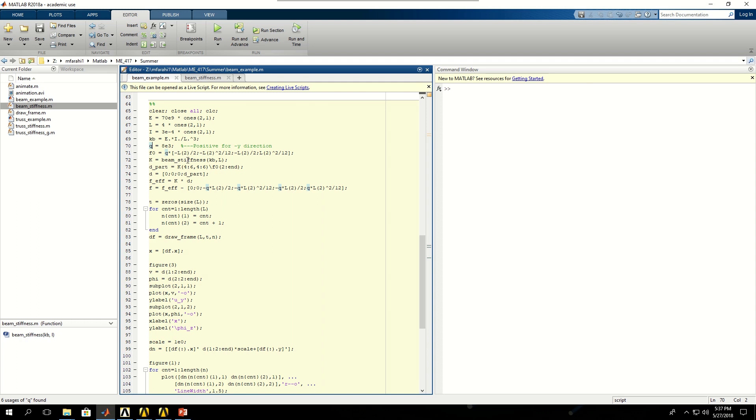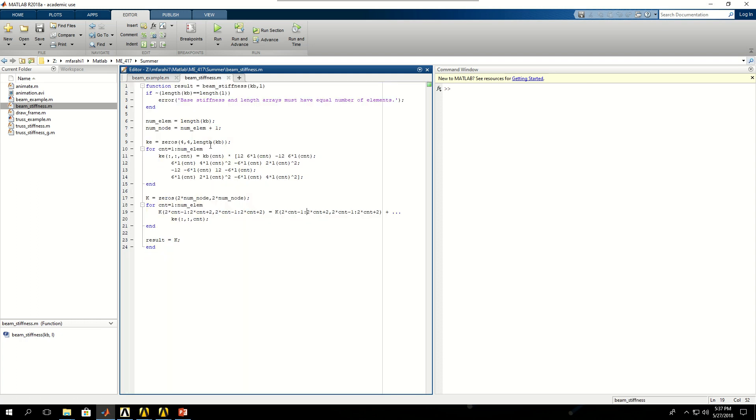Using the function file that I've written in MATLAB, it's a basic function file that first determines the local stiffness matrices for each of the elements individually, and then puts them together in the fashion that we just studied to find the global stiffness matrix, which is also the total stiffness matrix for the beam. It finds where those matrices should go and populates the big matrix.